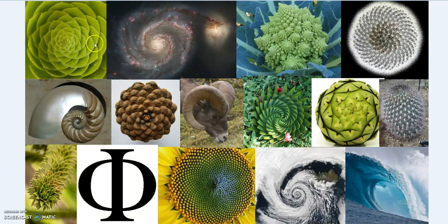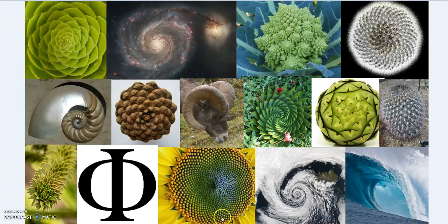These are some images related to the golden number, the golden mean, the divine proportion, or phi: 1.6180339887 onto infinity. Probably the most important, or certainly one of the most important numbers we need to learn about, because it describes so much of the natural world. But for some reason we don't get taught about this.